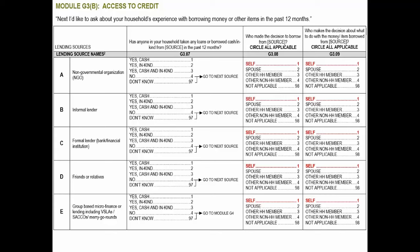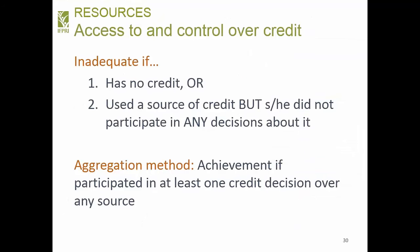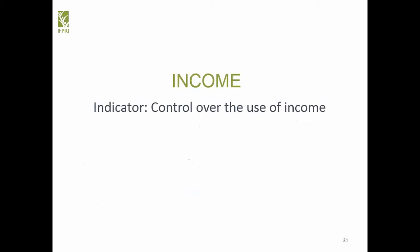For access to credit, we ask whether anyone in the household has taken loans in the last year, who made the decision to borrow, and who decides what to do with what's borrowed. If the respondent mentions themselves in those decisions, they're adequate. They're inadequate if the household has no credit or the respondent didn't participate in credit decisions. Achievement requires participating in at least one credit decision over any source.